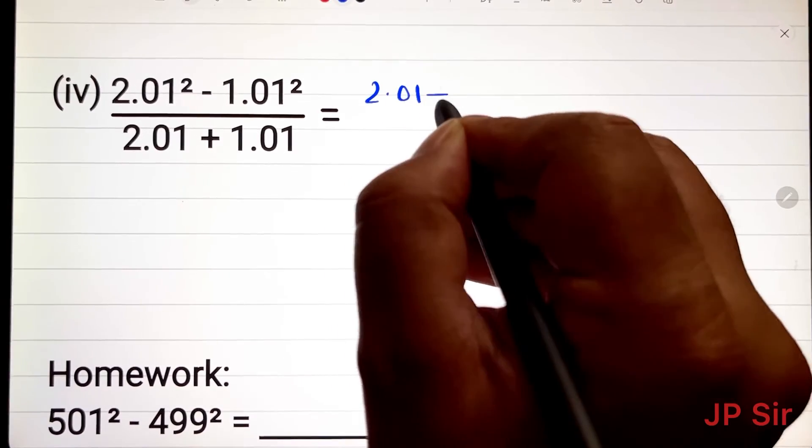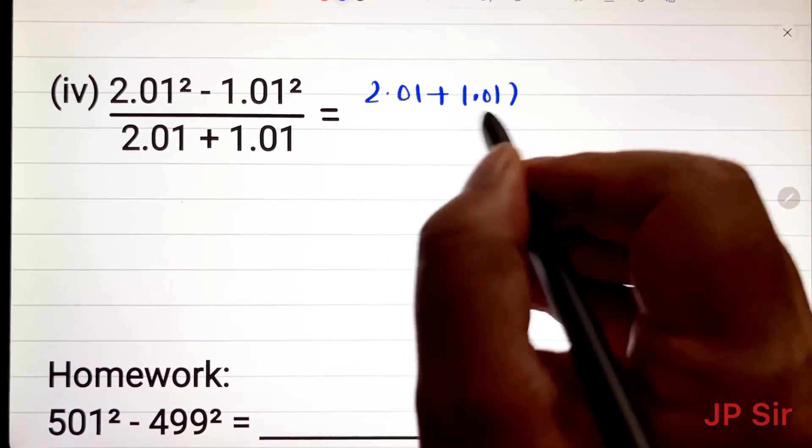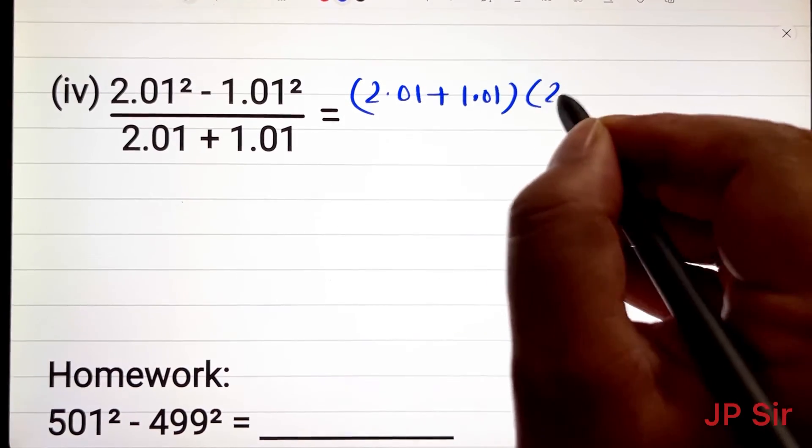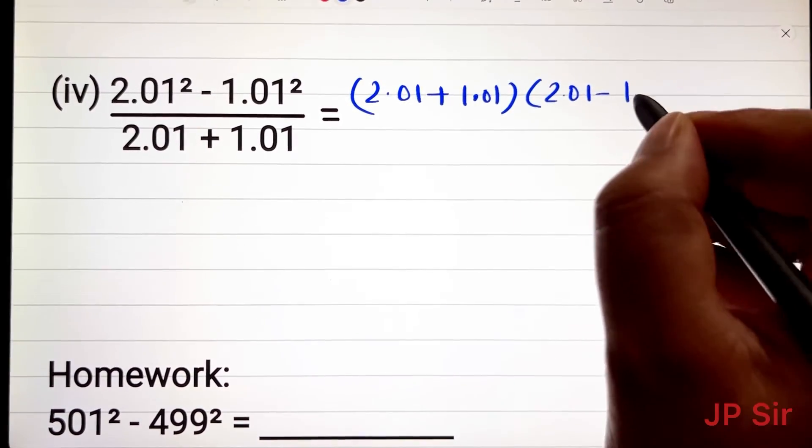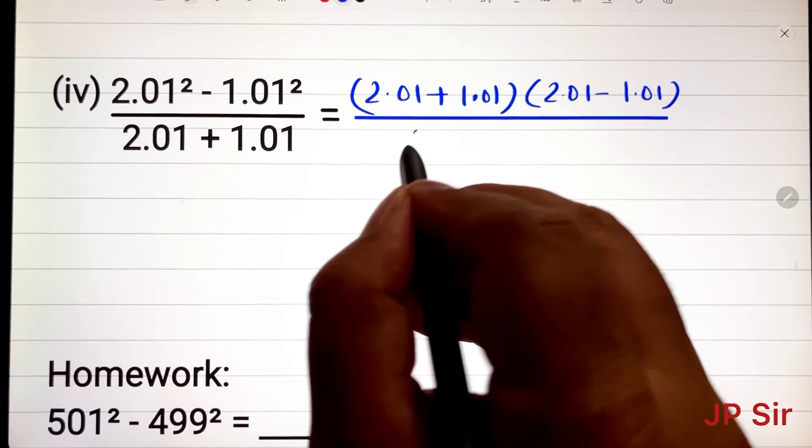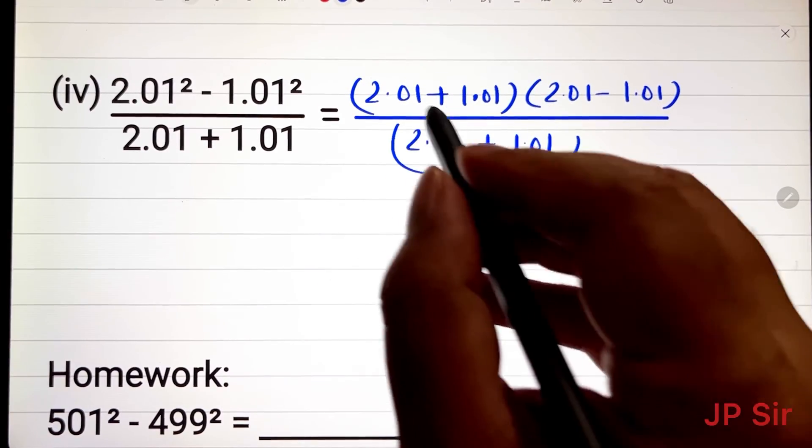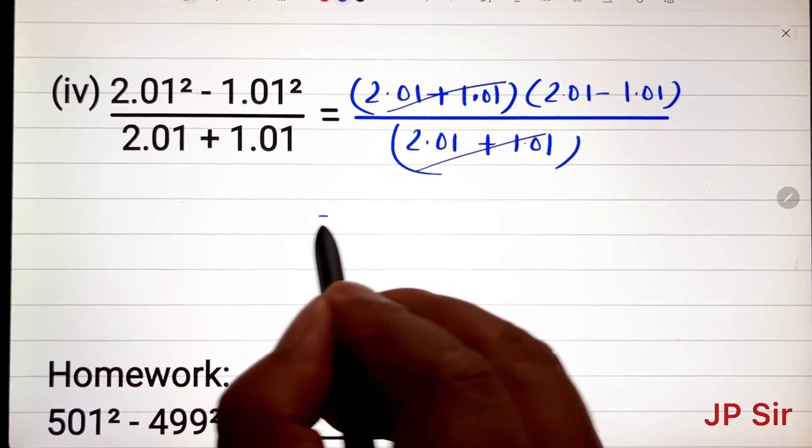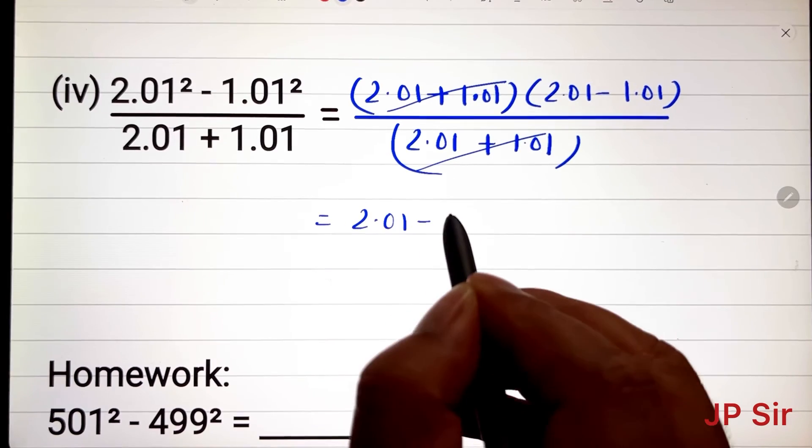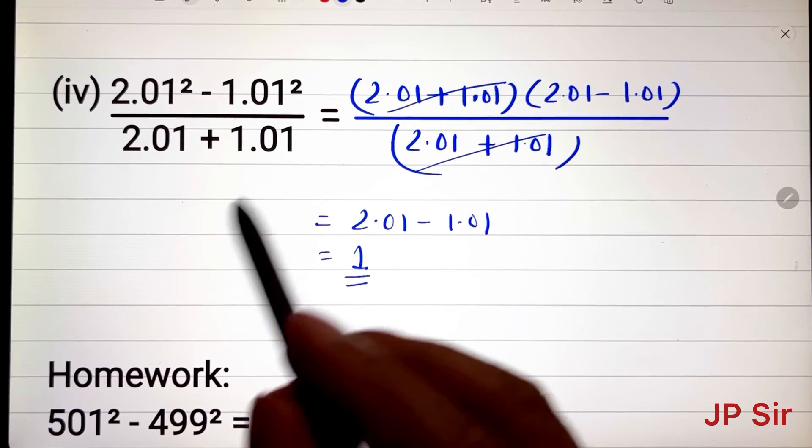So we will add these numbers first in one bracket and in another bracket we will subtract. In the denominator, 2.01 plus 1.01. Clearly you can see that we can cancel this and now we have 2.01 minus 1.01 and answer is 1. So this is the answer.